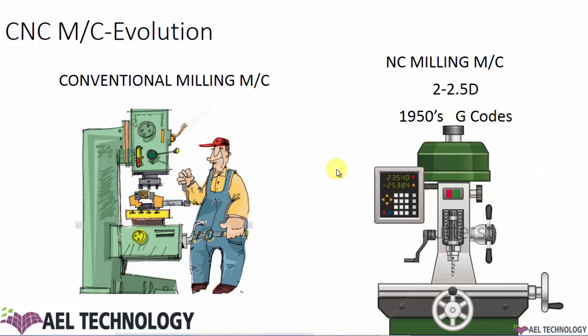Now let us see the evolution of the CNC machine. There are actually two phases before a CNC machine is fully evolved. In the first phase, in older days there were no CNC machines and parts were produced using conventional milling machines. Based on the skill level of an operator, you could get a good product, but the number of products produced was very less.